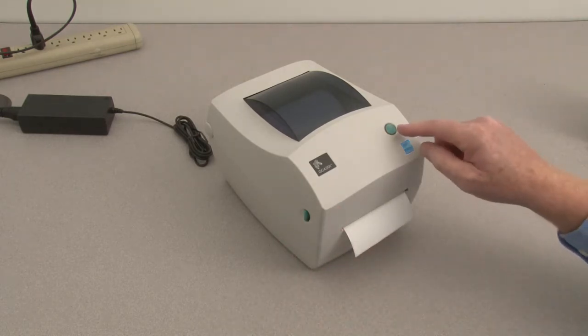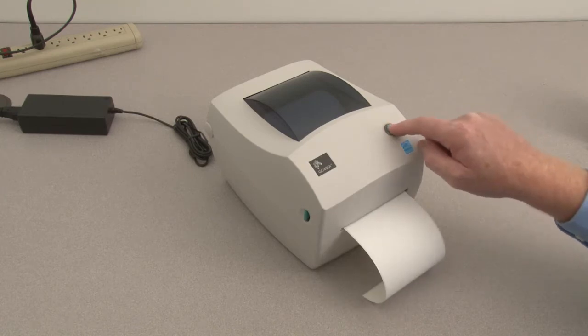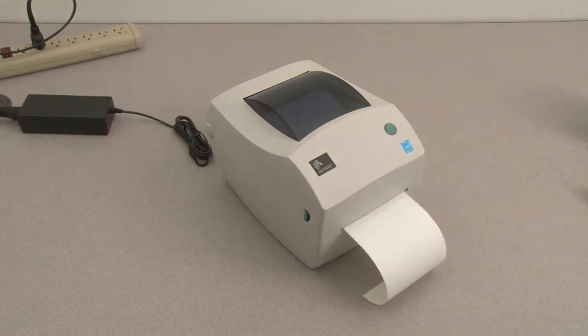The status indicator will flash. Press and hold the feed button until the status indicator flashes twice, then release. The printer will feed and measure several labels.